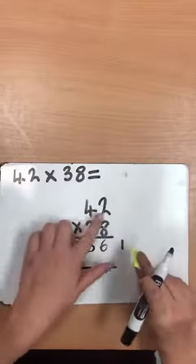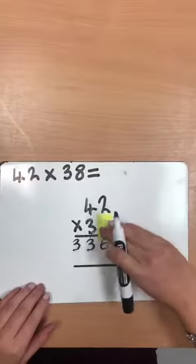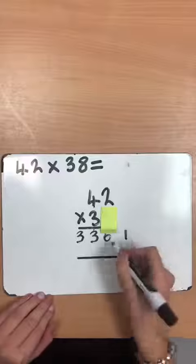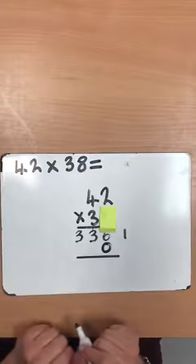Then they're going to multiply 42 by the tens column. So we can cover up our units. And because we're multiplying by tens, you need to place a zero in here as a place value holder.